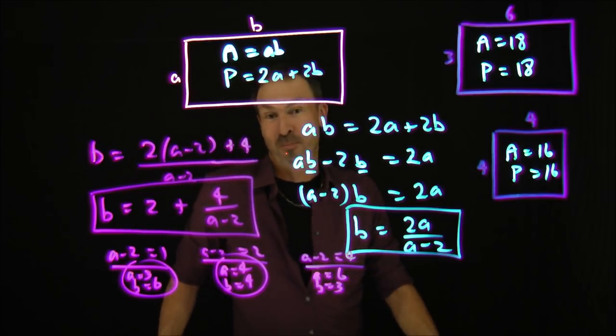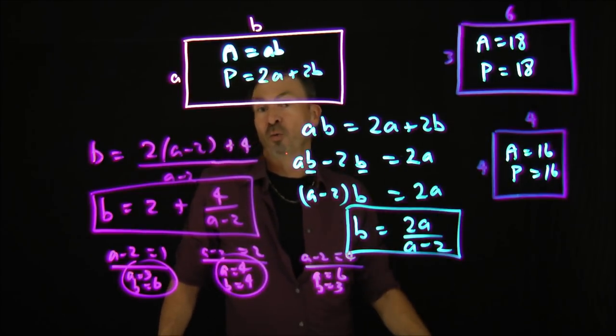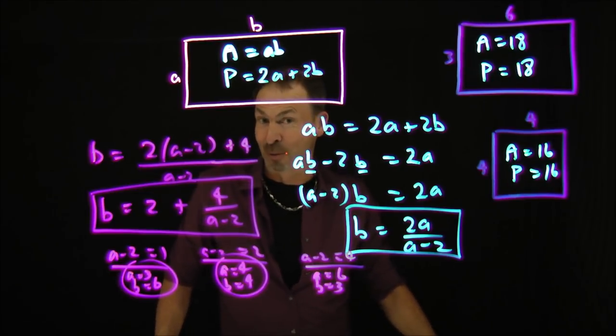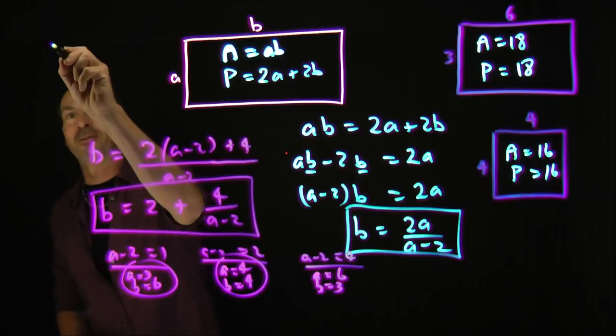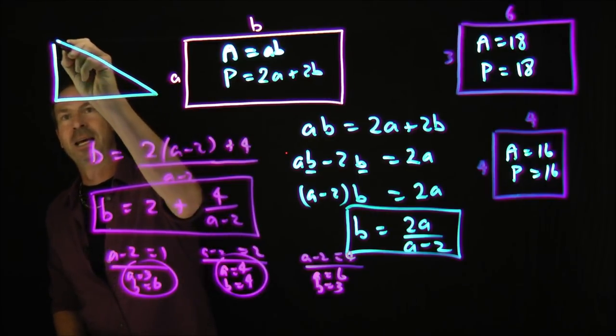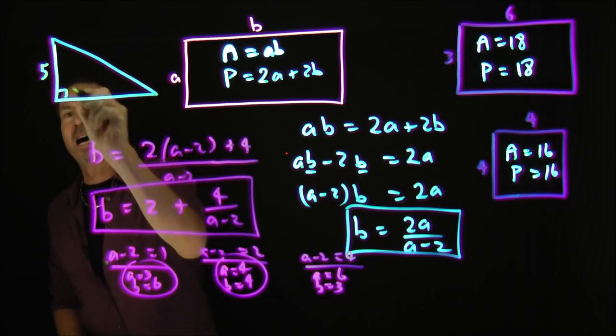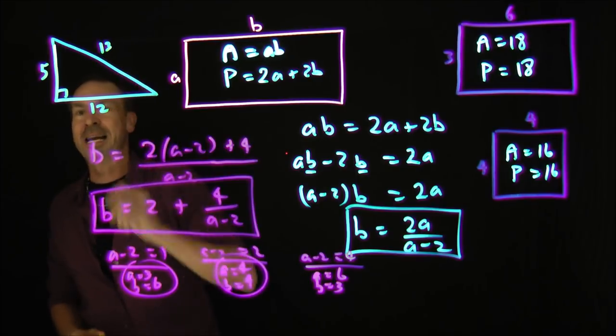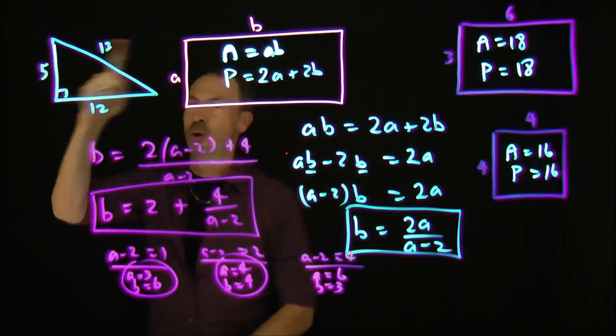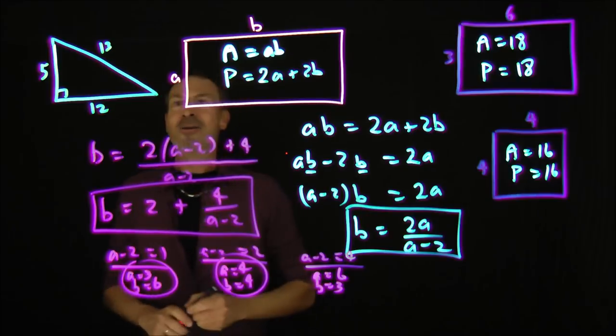So to end today, let me give you one more puzzle. This is focused on rectangles, but actually there's some interesting right triangles with curious properties as well. For example, if I take the classic 5, 12, 13 right triangle, everything's whole numbers there.